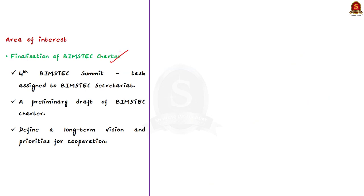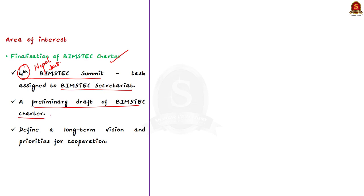The first area of interest is finalization of the BIMSTEC Charter. At the fourth BIMSTEC summit — note that the fourth BIMSTEC summit was held in Nepal in the year 2018 — a task was assigned to the BIMSTEC Secretariat to prepare a preliminary draft of the charter. This is to define a long-term vision and priorities for the cooperation of the BIMSTEC countries. In this fifth summit, they are going to finalize the charter.